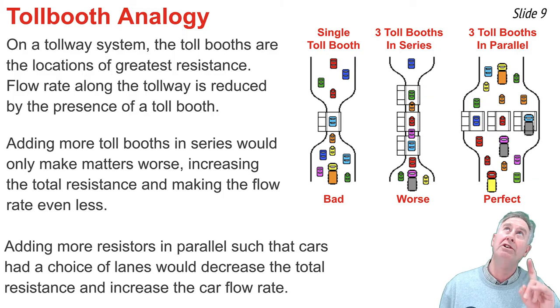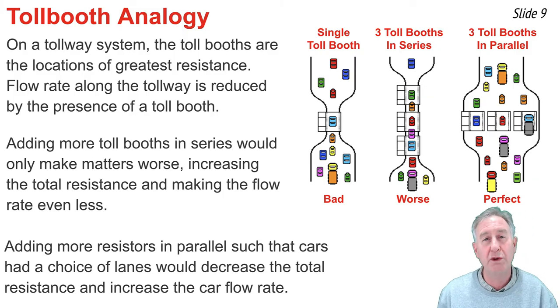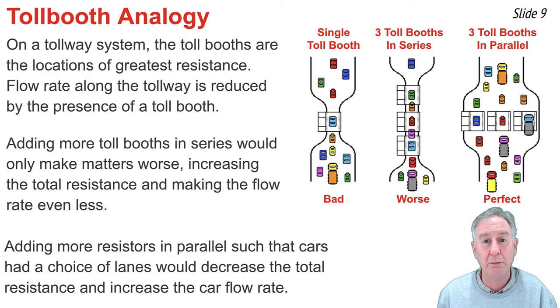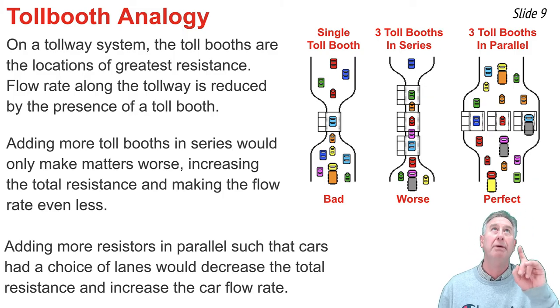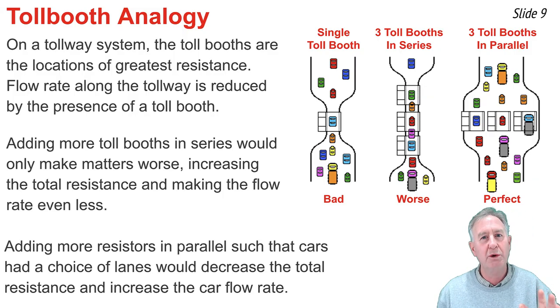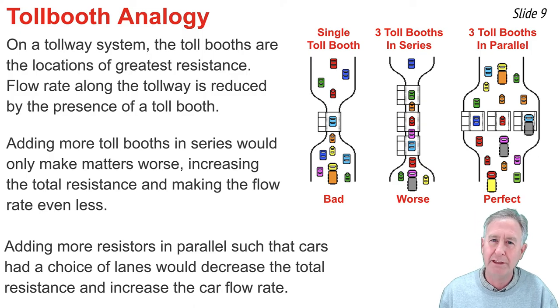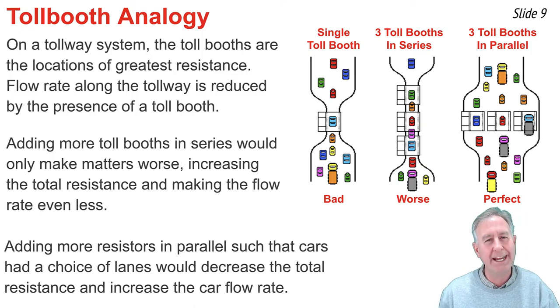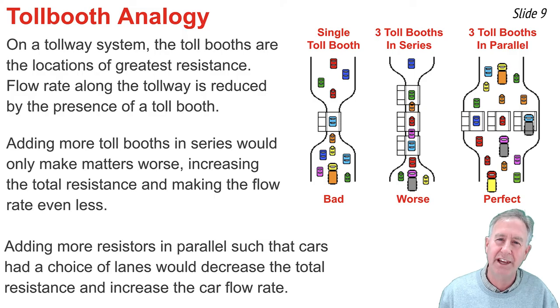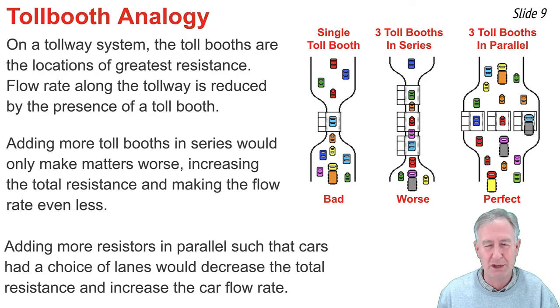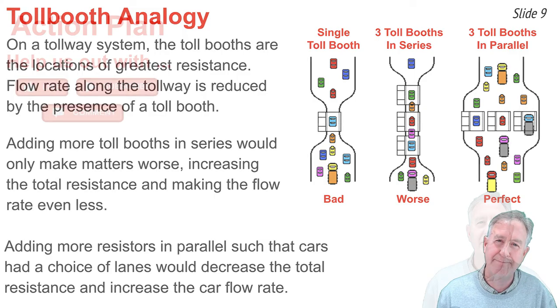In fact, one could imagine that if you added 10 tollbooths in parallel, you would have a dramatic increase in flow rate because you dramatically decrease the resistance in that section of the circuit.